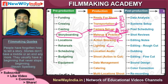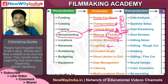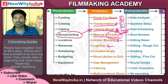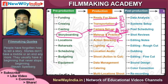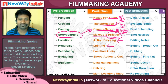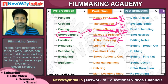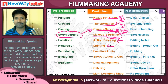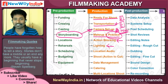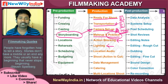Then lighting. Once the actors know their positions, you need to light them. Which comes first — lighting or camera setup — is relatively difficult to answer. It depends on the filmmaker and your crew, and what kind of experience you are having.